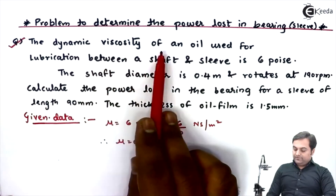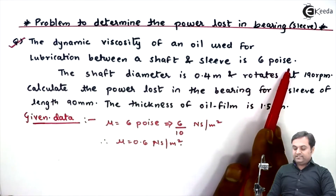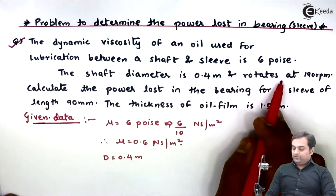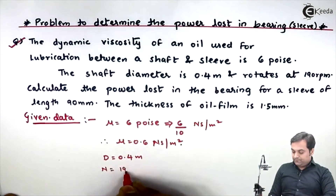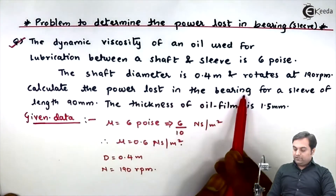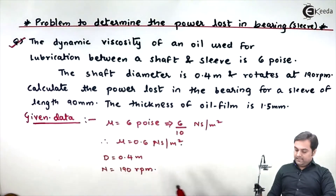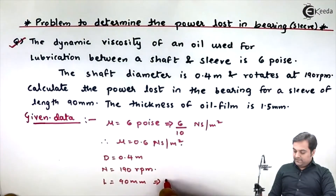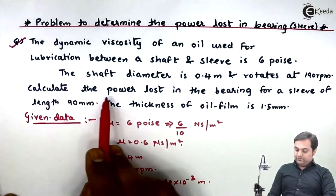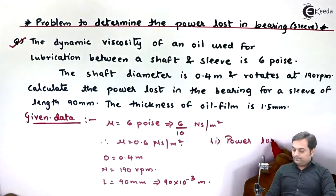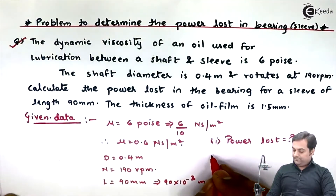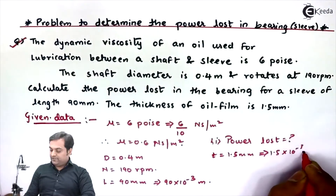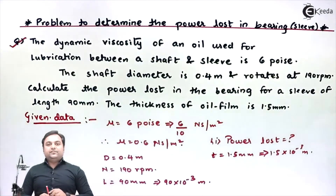The shaft diameter is 0.4 meter, so capital D = 0.4 meter. The shaft rotates at 190 rpm, so speed N = 190 rpm. The sleeve length is 90 mm, so L = 90 × 10⁻³ meter. We have to calculate the power lost. The thickness of the oil film is 1.5 mm, so t = 1.5 × 10⁻³ meter. Now everything is written in the form of data.